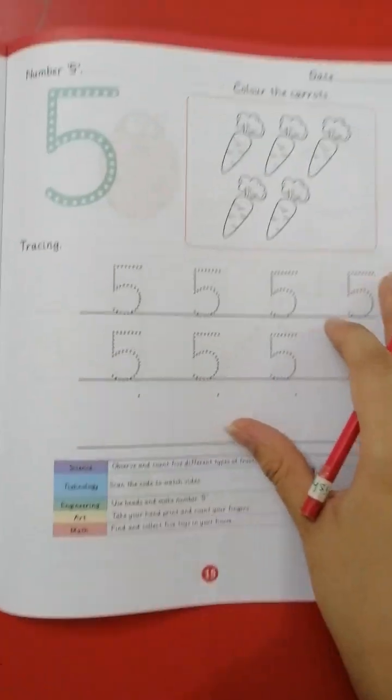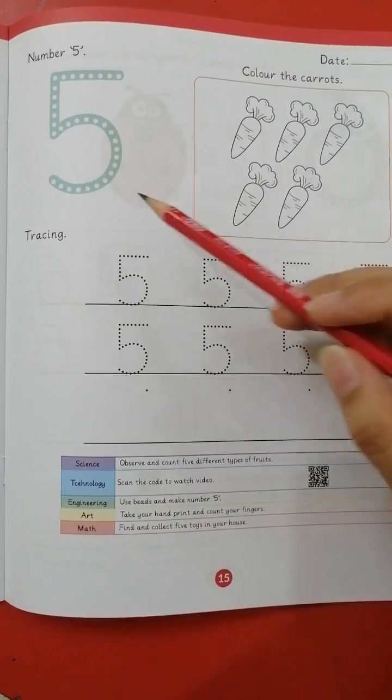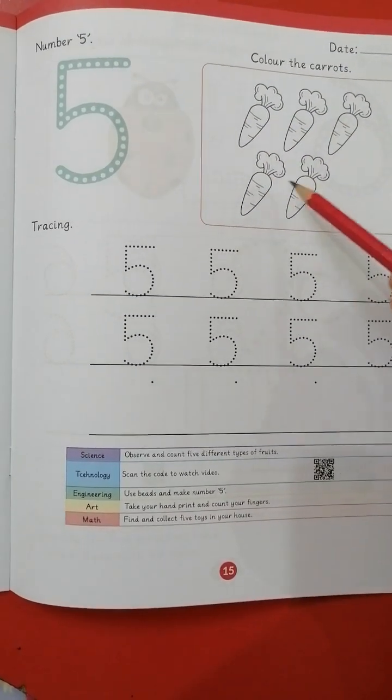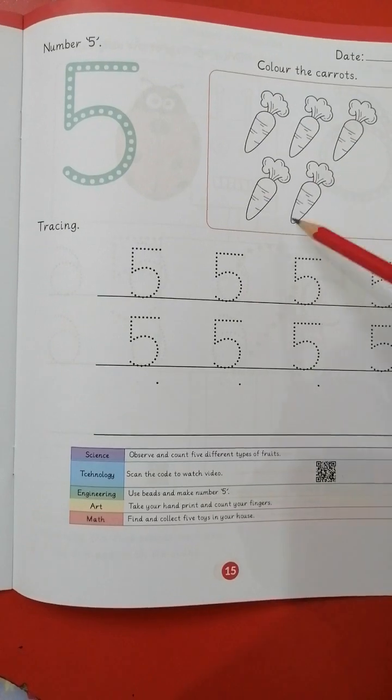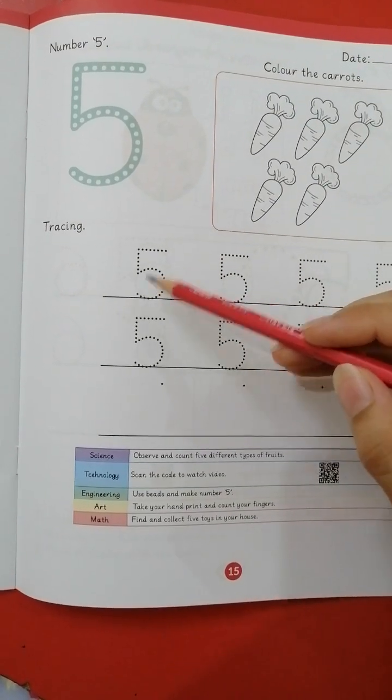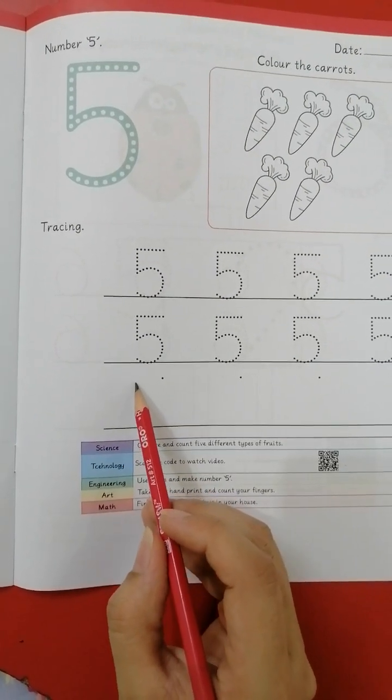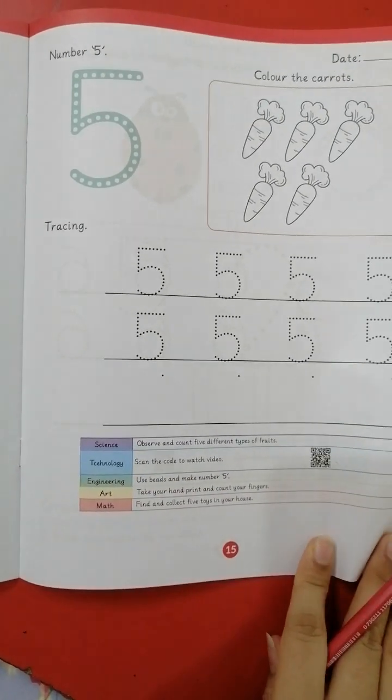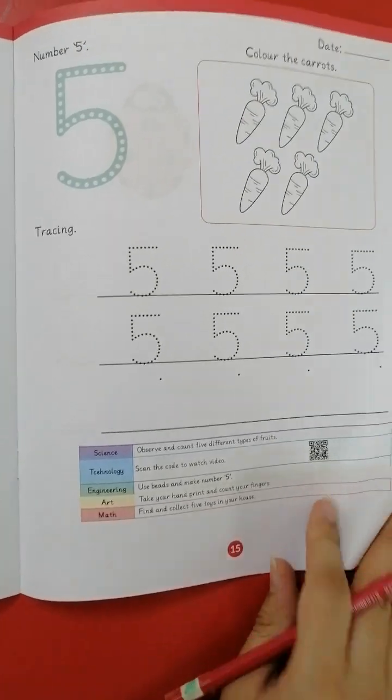Next is number five. You have to trace it. Count carrots. One, two, three, four, five. You have to color it. Then trace number five and then write it. Sleepy line, standy line, half a circle. Number five. Let's move.